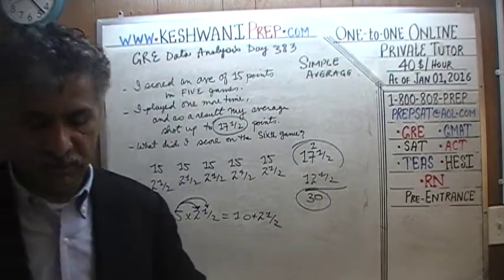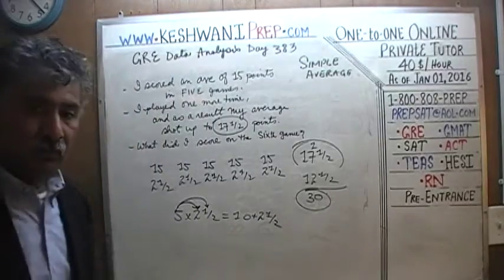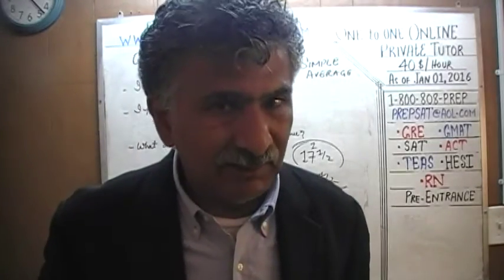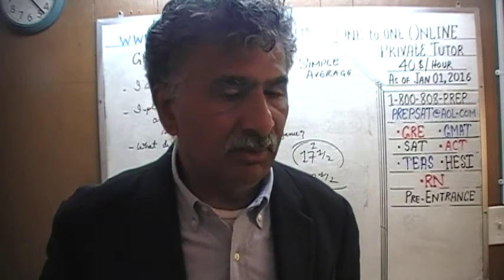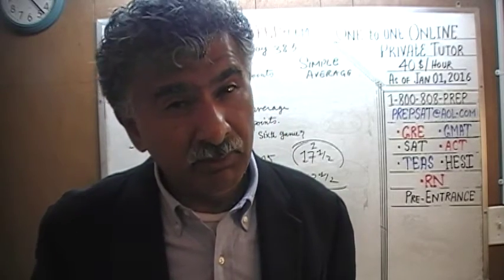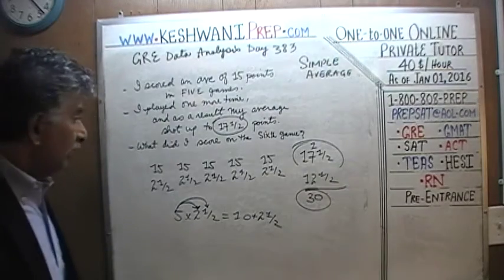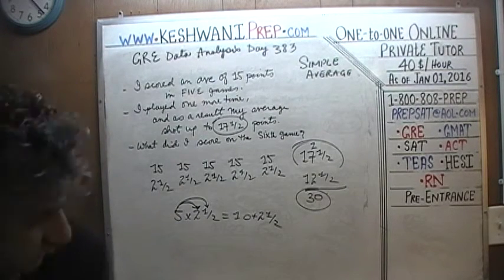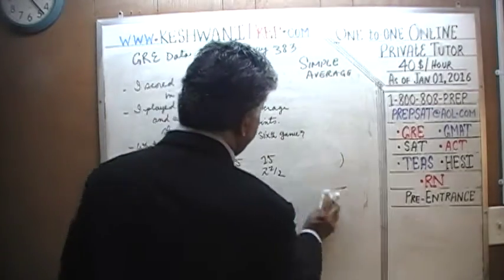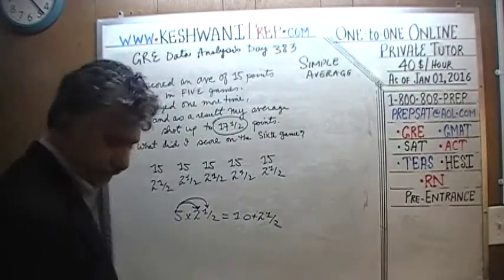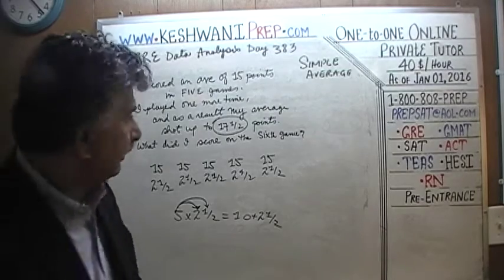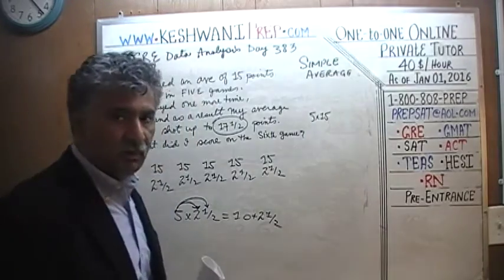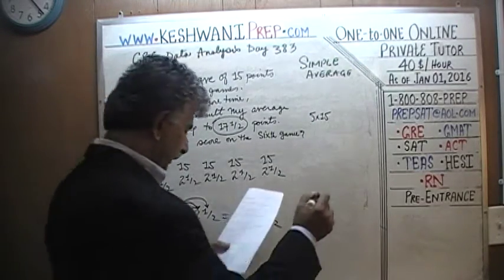That comes out to exactly 30 points in the last game. That's the intuitive way of doing it. If you prefer the classical, algebraic way, let's set it up on the side. He played five games with an average score of 15, so his total points in five games was 75.